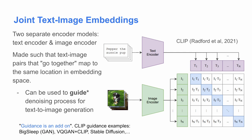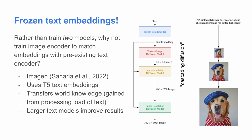One way of handling this is with so-called joint text-image embeddings, whereby we have two separate models — one for text and one for images — trained such that their encodings lie arbitrarily close to each other for similar text-image caption pairs. This was shown with CLIP (Radford et al.), and it was also shown that CLIP could be used as a guidance signal — even as an add-on for things like the Big Sleep, NVQGAN-CLIP, Stable Diffusion, and DALL-E. Why train a whole text model from scratch since that's expensive? Use frozen text embeddings from an existing trained model. This was one insight from Imagen by Google — train only the image side, and have it match up with a pre-trained text encoder like T5. You get a lot of world knowledge from the text model, which improves image results. Imagen also introduced cascading diffusion — generating smaller images and then larger ones.